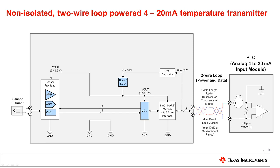In this case, we are talking about a 4 to 20 milliamp system, where we have the transmitter on the left side and the PLC as a receiver of the 4 to 20 milliamp signal on the right side. The transmitter itself consists of a sensor front end, an internal power regulator such as a step-down converter or an LDO, an MCU, and a D-to-A converter and HART modem to complete the 4 to 20 milliamp interface. There may also be a pre-regulator which converts the loop voltage — ranging from about 8 to 36 volt — down to an intermediate voltage of, say, 5 volt.